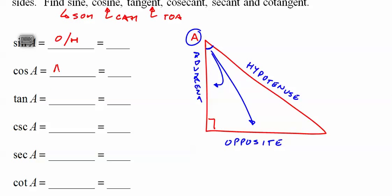Cosine is the adjacent side divided by the hypotenuse. Tangent is the opposite side divided by adjacent.